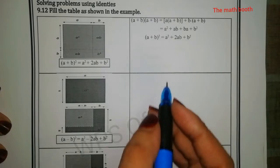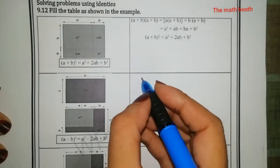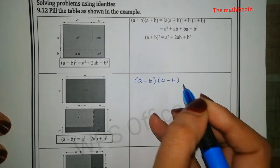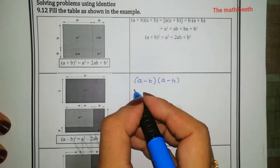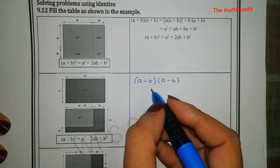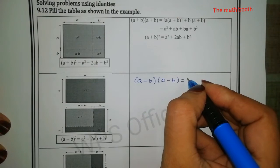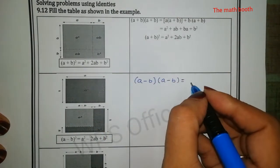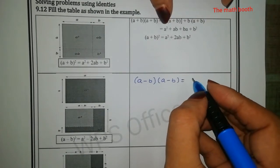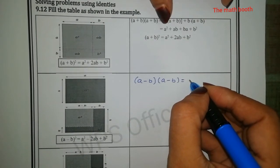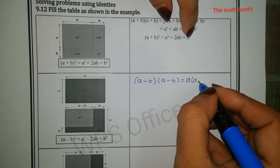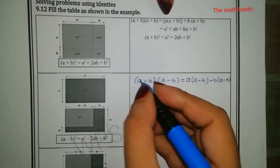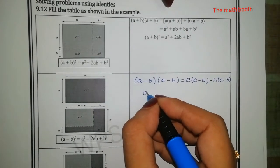Now, (a - b) whole square — same way, (a - b)(a - b) we have to solve. So let us split the bracket: (a - b)(a - b). One bracket open, one bracket splitting, and one back bracket as it is — so we get (a - b)(a - b).